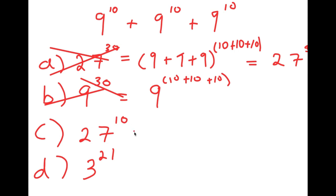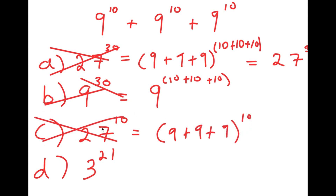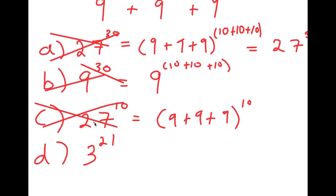For C, 27 to the power of 10 was arrived at by adding the bases but keeping the exponent the same — this is also wrong. That's not how you add exponents. Now D, 3 to the power of 21, is by process of elimination the right answer, and we're going to see how they got this.